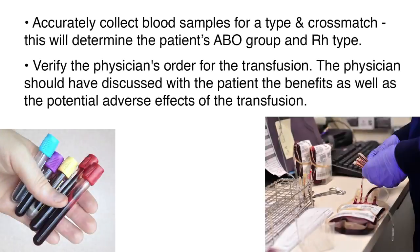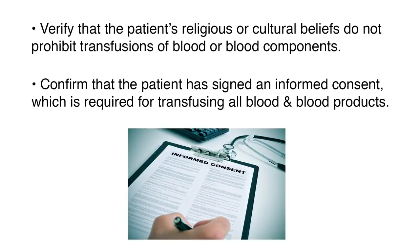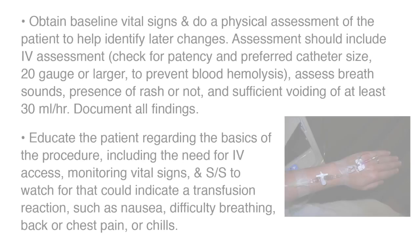Safe practice starts with several key actions that must be taken before beginning a transfusion. Accurately collect blood samples for a type and cross match, which will determine the patient's ABO group and RH type. Verify the physician's order for the transfusion. The physician should have discussed with the patient the benefits as well as the potential adverse effects. Verify that the patient's religious or cultural beliefs do not prohibit transfusions, and confirm that the patient has signed an informed consent, which is required for transfusing all blood and blood products.